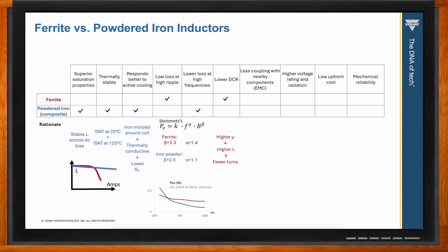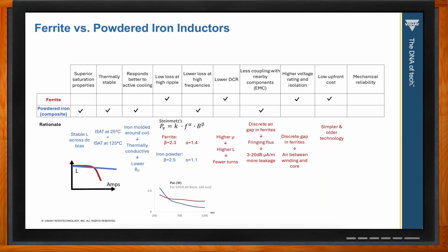For EMI and electromagnetic compatibility, powdered iron is usually the better choice. The discrete air gap built into ferrites can produce up to 20 dB of magnetic field leakage that can couple to nearby components. That same gap improves the voltage rating and isolation rating compared to powdered iron. From a cost perspective, ferrites tend to be cheaper since they use simpler, older technology.